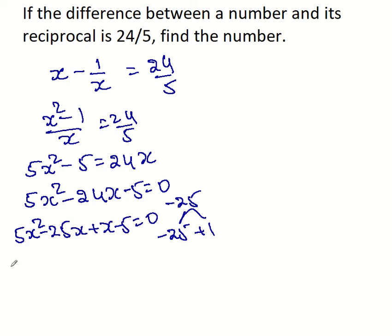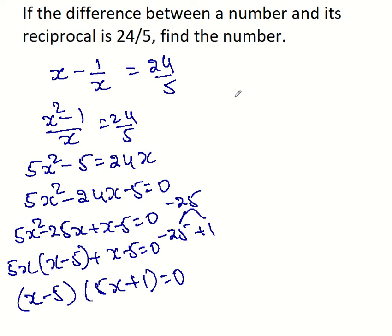First two terms you can factor out 5 x, you'll get x minus 5. Plus x minus 5 equal to 0. x minus 5 gets common, so 5 x plus 1 times x minus 5 equal to 0.